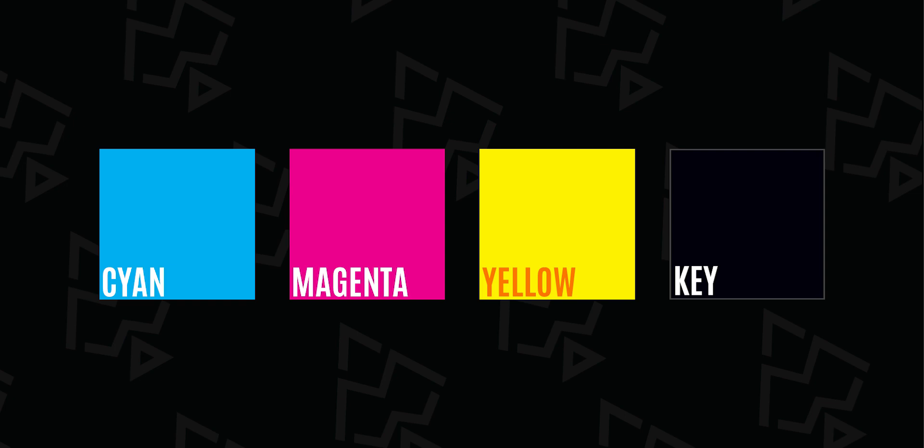So if RGB can do everything, why do we need CMYK? CMYK stands for Cyan, Magenta, Yellow, and Key — Key means black. Suppose I have made a design in RGB and I want to print it. When that design goes into the printer, the printer has to process it. If the printer operated in RGB, to produce white it would put all colors together — but how would it produce black?